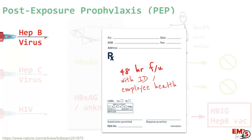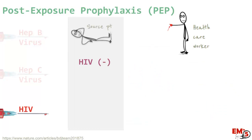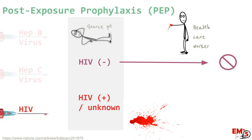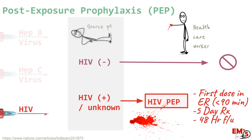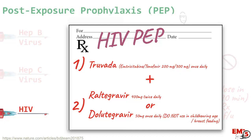For HIV, first get the information from the source patient. If they're HIV negative, nothing else to do. If they're positive or unknown and it's a clinically relevant exposure, offer HIV post-exposure prophylaxis. You should give the first dose in the ER, preferably within one to two hours of the exposure, then send them home with a five-day prescription and make sure they follow up in 48 hours with employee health or infectious disease. The standard regimen is two medications: Truvada and either Bictegravir or Dolutegravir. And remember, for all of this, follow up in 48 hours with employee health.